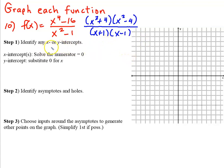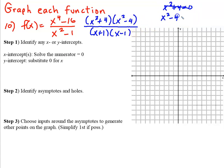X-intercepts come from setting the numerator equal to 0. If you set (x² + 4) equal to 0 and solve for x, you get an imaginary number, so there's no x-intercept from that factor. But from the other factor (x² - 4), solving gives x = ±2, so we'll be crossing the x-axis at positive 2 and negative 2.